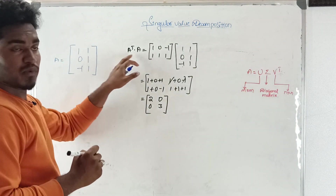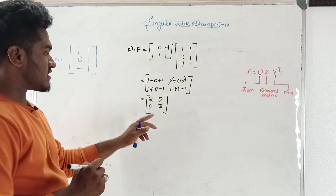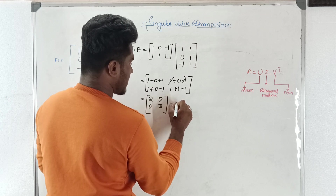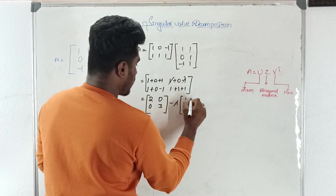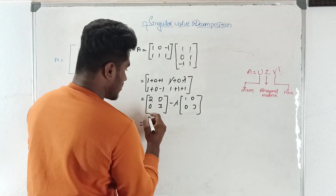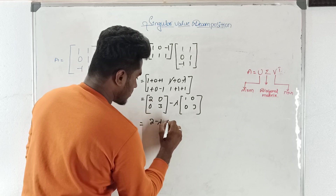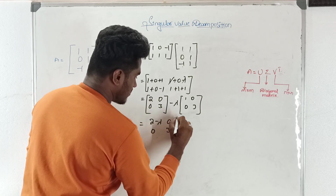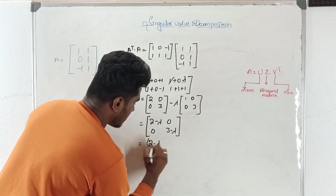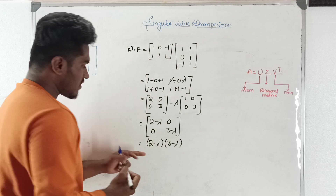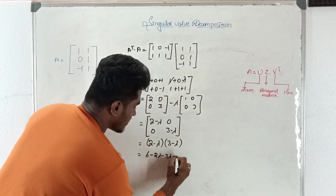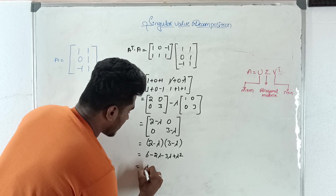The resulting A transpose A matrix is obtained. Next we compute its eigenvalues and eigenvectors. Eigenvalues are found from det(A - λI) = 0. With the identity matrix, this gives (2 - λ)(3 - λ) = 0, expanding to λ² - 5λ + 6 = 0.